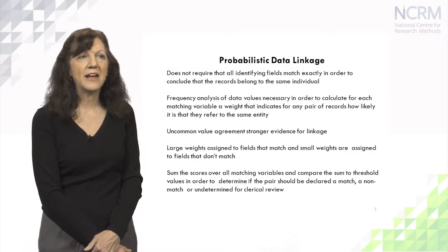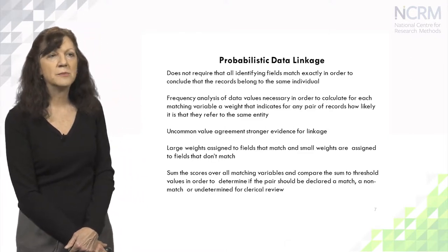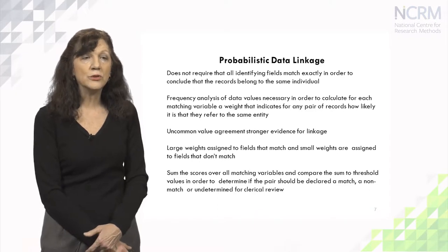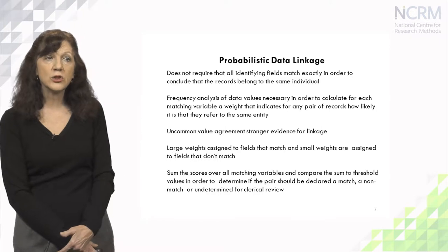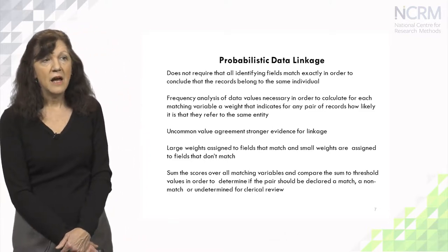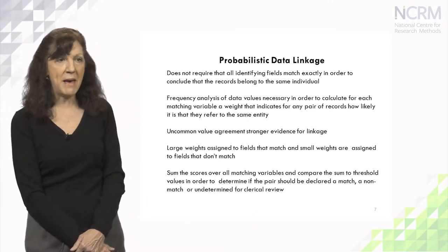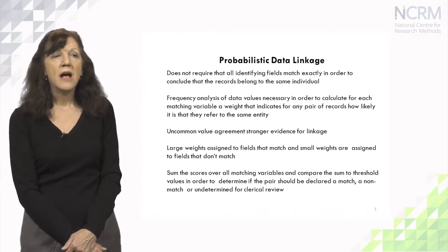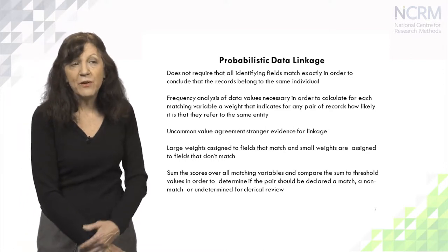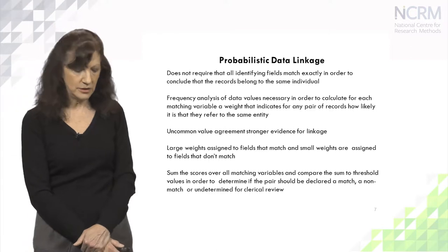In contrast, probabilistic data linkage does not require that all identifying fields match exactly to conclude that records belong to the same individual. We carry out a frequency analysis of the data values to calculate, for each matching variable, a weight or score indicating how likely it is that any pair of records refers to the same entity. Uncommon value agreements give stronger evidence for linkage. Large weights are assigned to fields that match, small weights to fields that don't match. We then sum the scores, compare to a threshold, and determine whether the pair is a match, a non-match, or should be sent to clerical review.